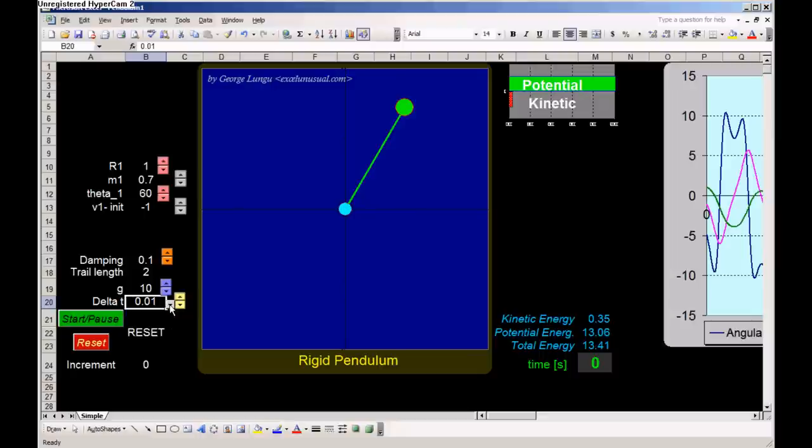If you keep the simulation within convergence limits, you can adjust the speed of the model. Of course, the precision will go down as you increase the time step.